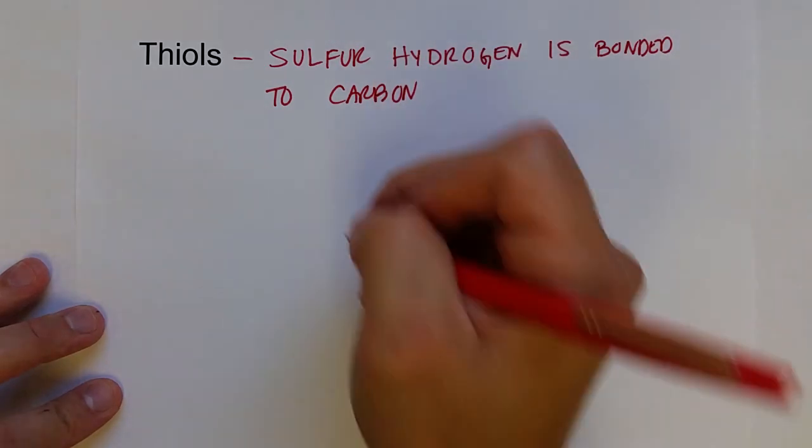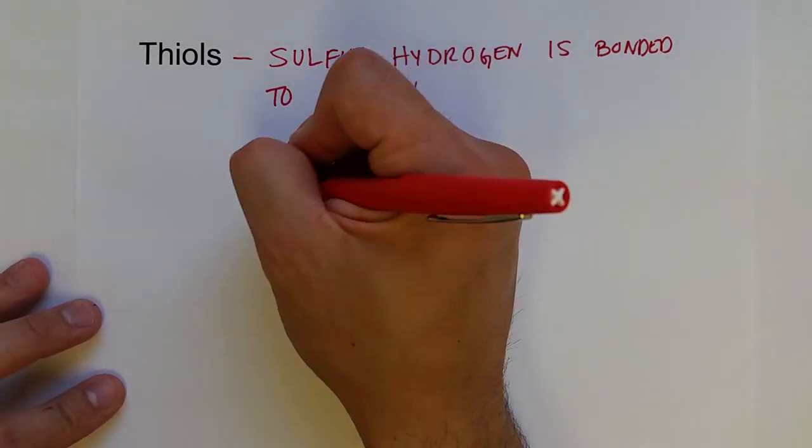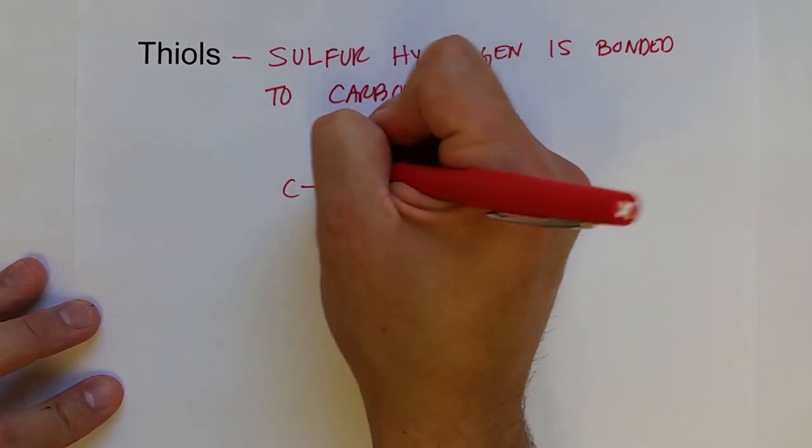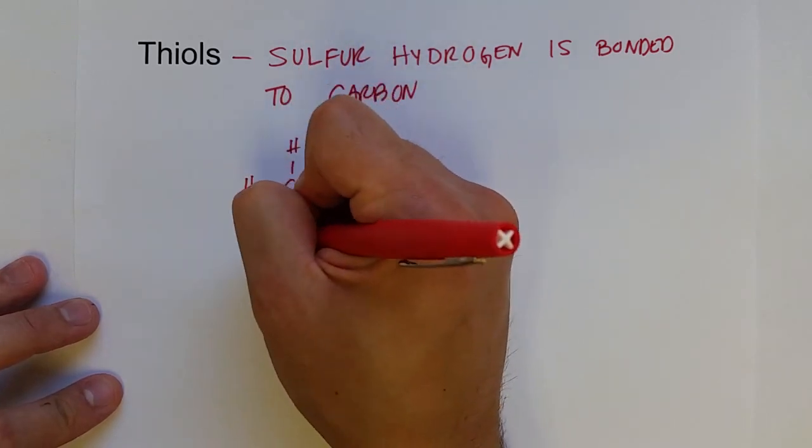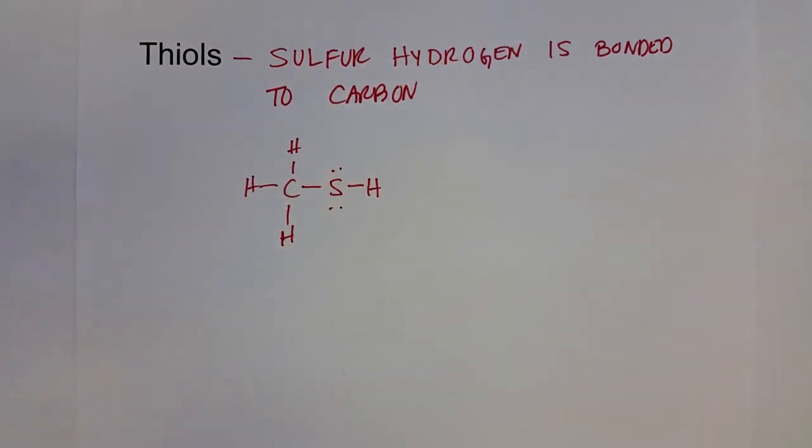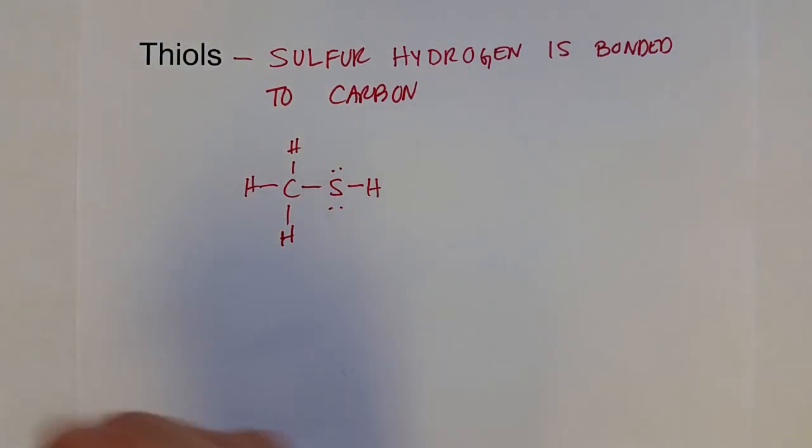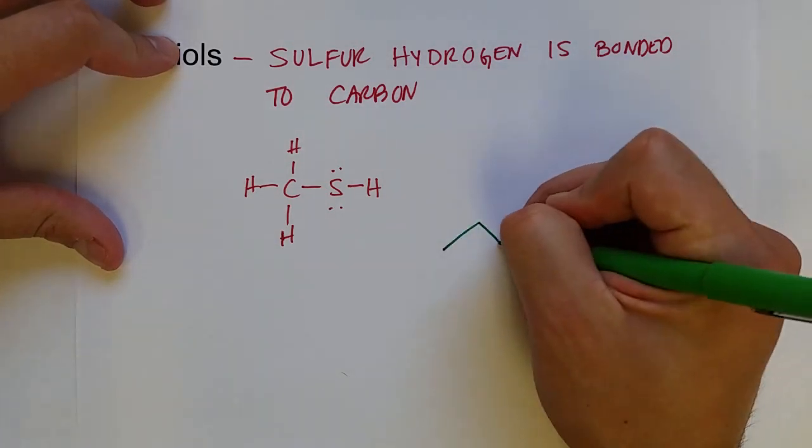This would take on the shape—it's pretty much exactly like an alcohol group. So carbon bonded to sulfur bonded to hydrogen. Since sulfur is in the same group as oxygen, it can take on the same sort of bonding mechanism: two bonds and then two lone pairs.